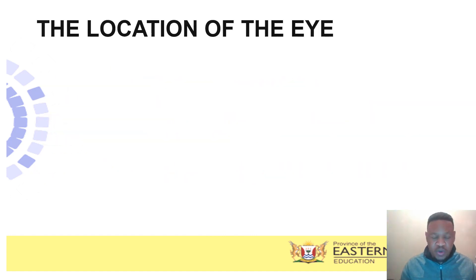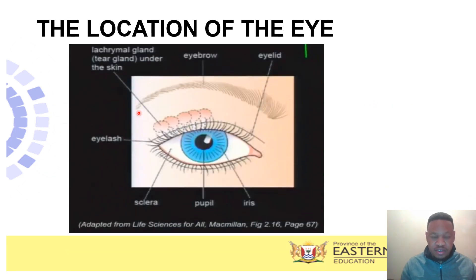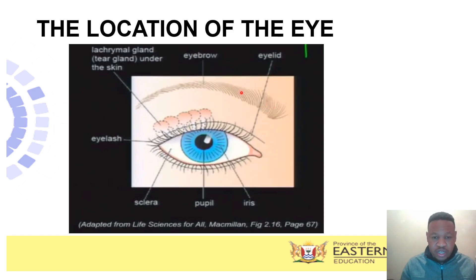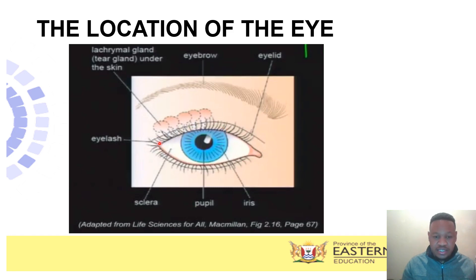Now let us look at the location of our eye — the external structure. Our eyes are located in the eye sockets. Looking at your friend, you will see the eyebrows. This part protects the eye from sweat, water, or any debris that may try to fall into your eye. Beneath the skin are the lacrimal glands, also known as tear glands. They produce tears, keep the eye moist, and are also antiseptic — they kill bacteria or any foreign matter that may stay on your eye.